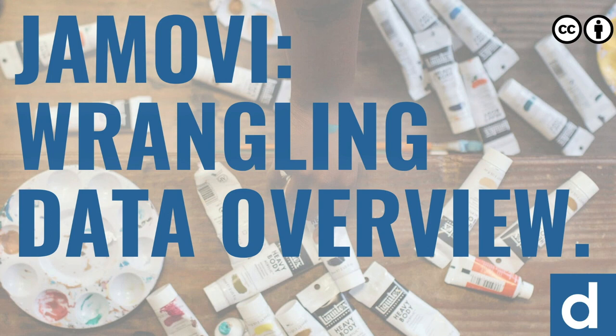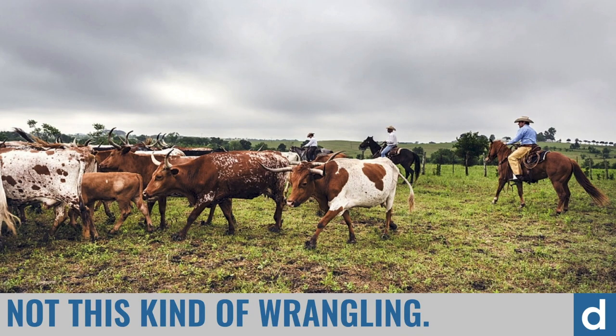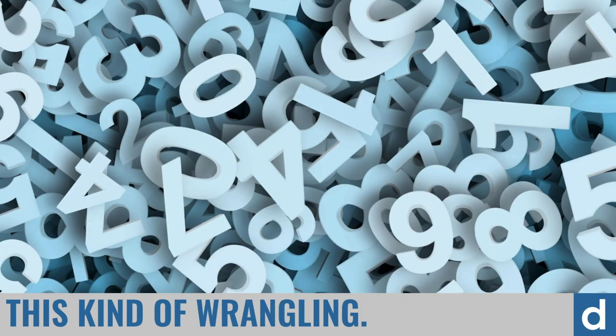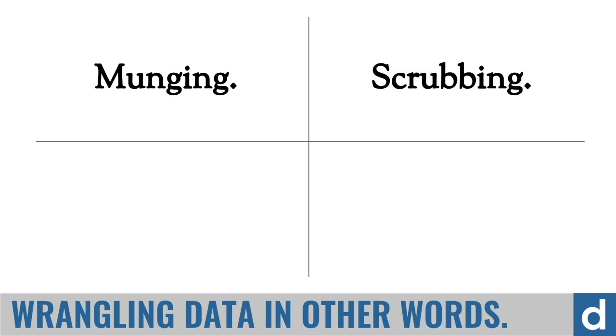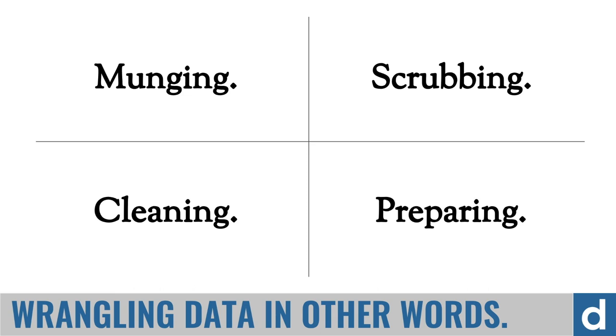Our next chapter is about wrangling data in Jamovi. You may wonder what I mean by wrangling — I'm not talking about the cowboy kind out on the range. Instead, I'm talking about taking data that's in a mess, in a jumble, and organizing it so you can analyze it. It goes by a few other names: data munging, data scrubbing, data cleaning — really it just refers to the general process of preparing your data for analysis.